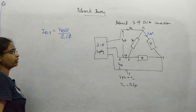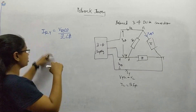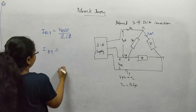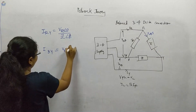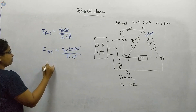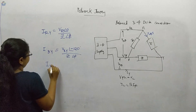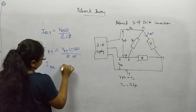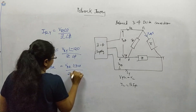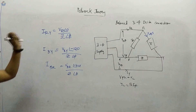Make sure all parameters are written in only one phase. For IBY, we take VRY at minus 120 degrees divided by Z∠φ. For IBR, we take VBR at minus 240 degrees (or plus 120 degrees) divided by Z∠φ. This completes the balanced three-phase delta connection equations.